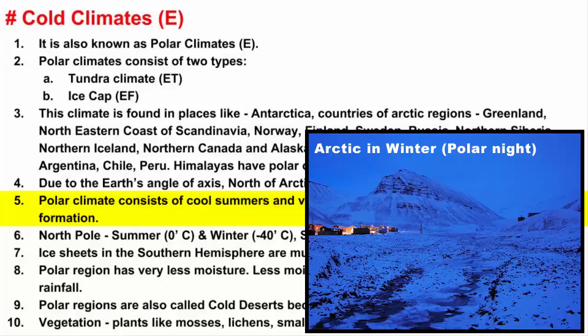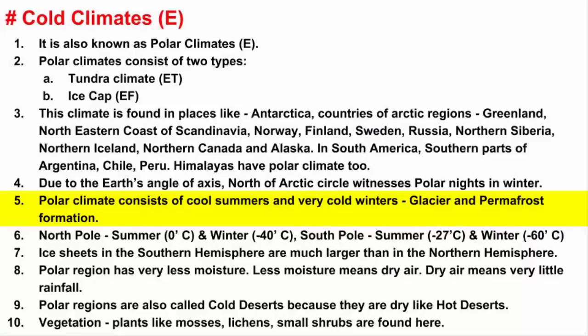A polar climate consists of small summers and very cold winters, which is the reason behind the glaciers and permanent layer of ice. The North Pole has an average temperature of 0 degrees Celsius in summer and minus 40 degrees Celsius in winter. The South Pole has an average temperature of minus 27 degrees Celsius during summer and minus 60 degrees Celsius during winter.